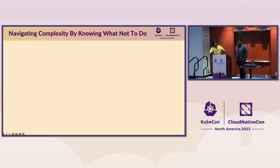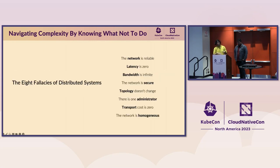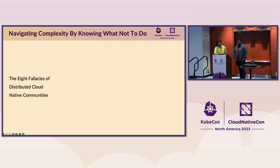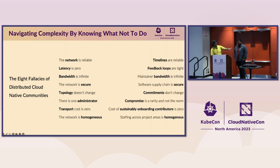Once we enter this land of complexity, it's important to know how to navigate it better. When distributed systems started becoming mainstream, a set of fallacies were introduced to help guide programmers as to what not to do — navigating complexity by knowing what not to do. These were called the eight fallacies of distributed computing. What we want to talk about is, as cloud-native communities grow and become more complex, we need a set of fallacies to help us navigate and sustain them. We'd like to introduce the eight fallacies of distributed cloud-native communities.